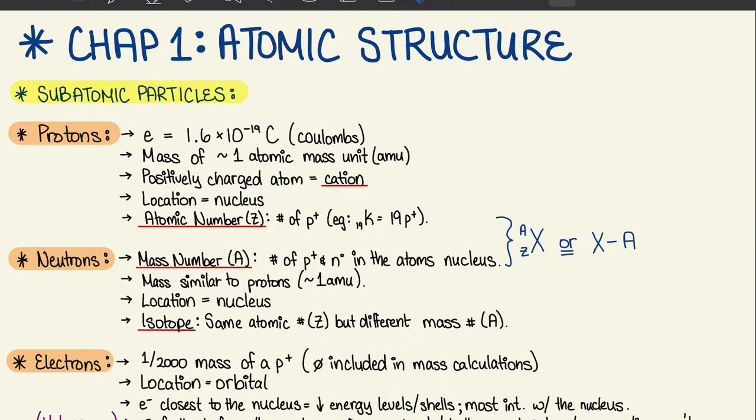So cation equals positive equals protons. To find the number of protons, we have the atomic number, which is Z. For example, when you have 19 K, or potassium, you're going to think that is 19 protons. We're going to get into some examples later to make it a bit easier, but just a quick example there.